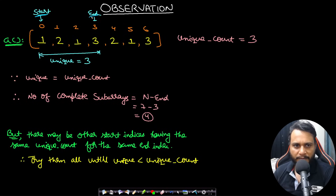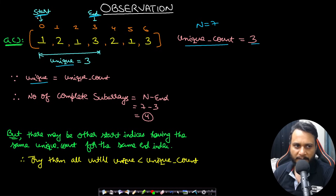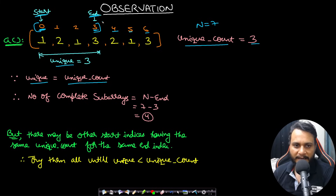Let's look at a key observation. If we have a subarray from start to end with 3 unique elements, and the total unique elements in the entire array is also 3, then this is a complete subarray. Now if 0 to 3 contains a unique count equal to the total unique count, then 0 to 4, 0 to 5, and 0 to 6 will all be valid as well — because elements at indices 4, 5, 6 must already be present in 0 to 3.